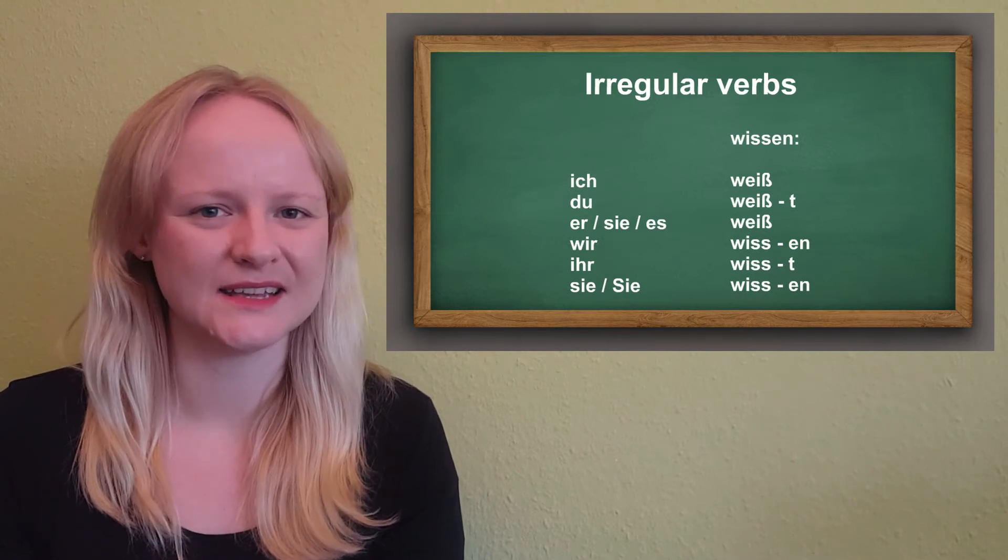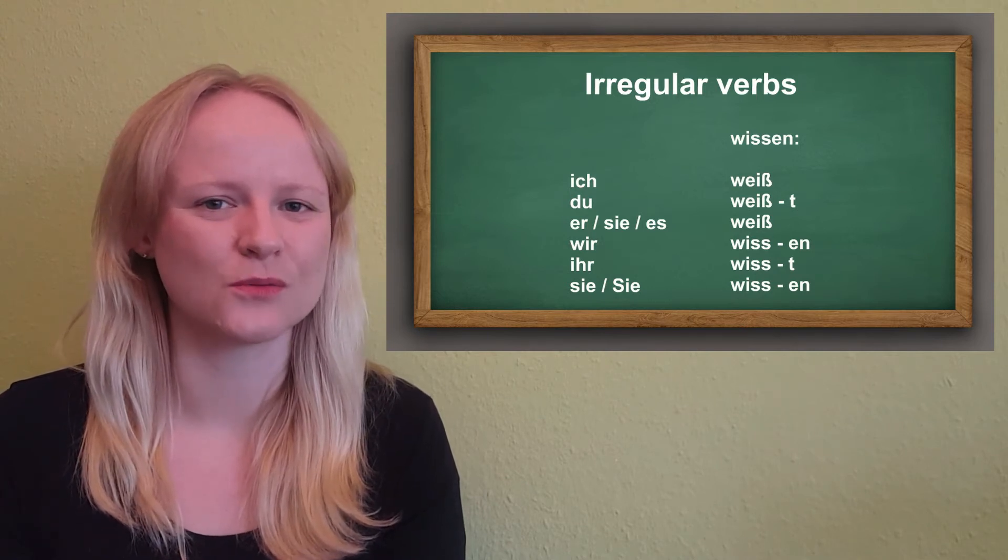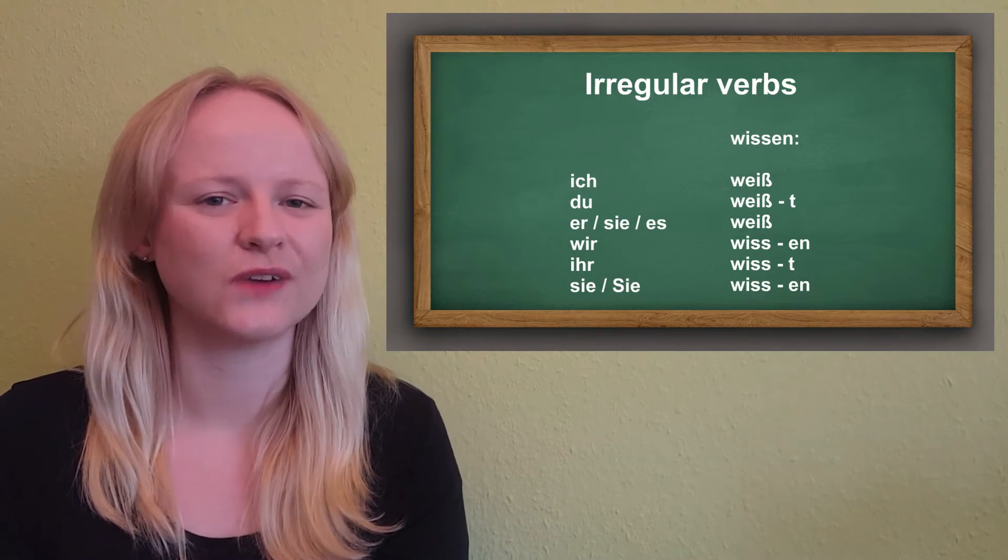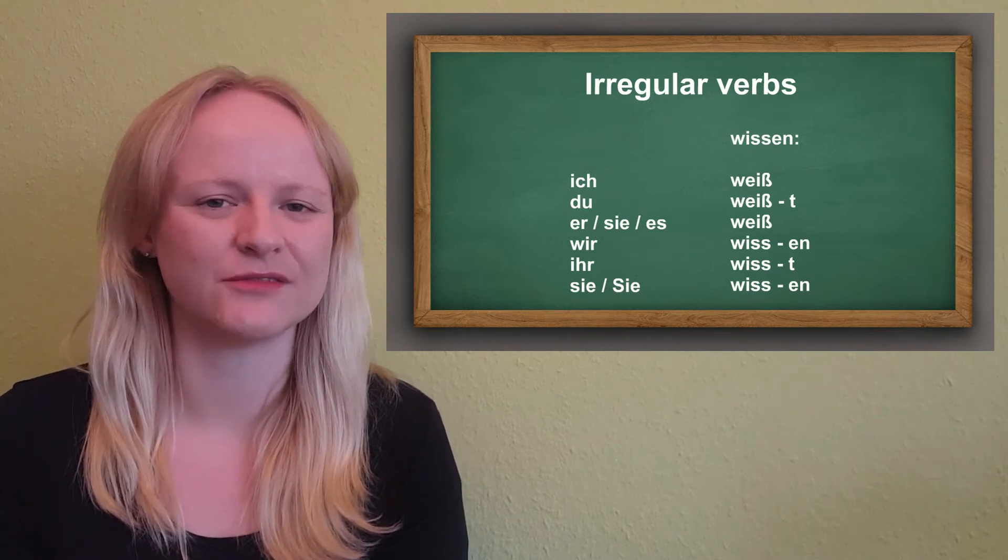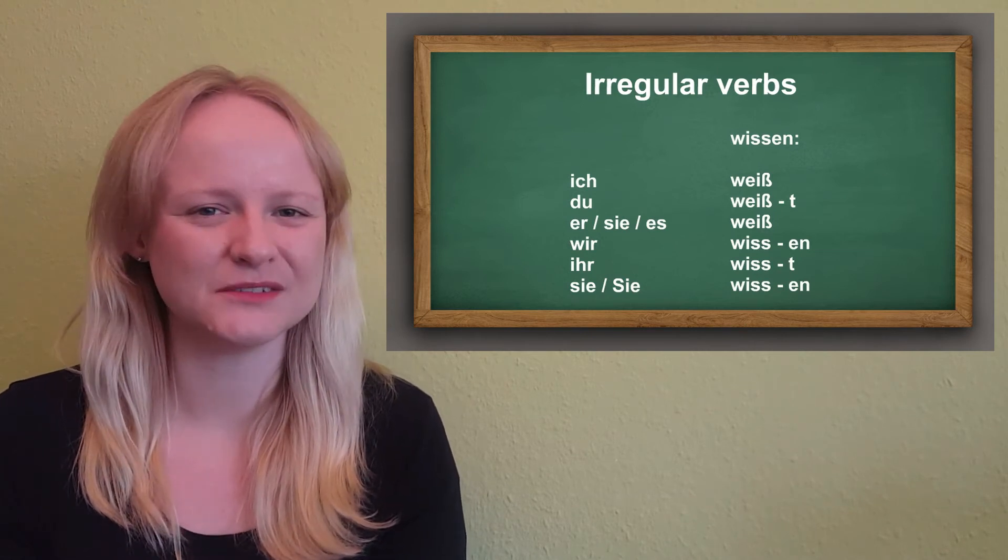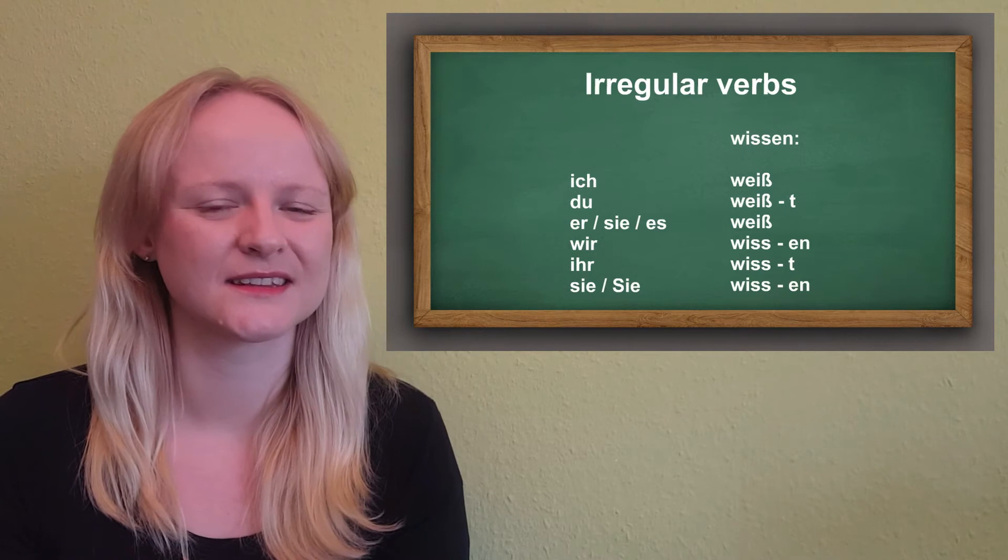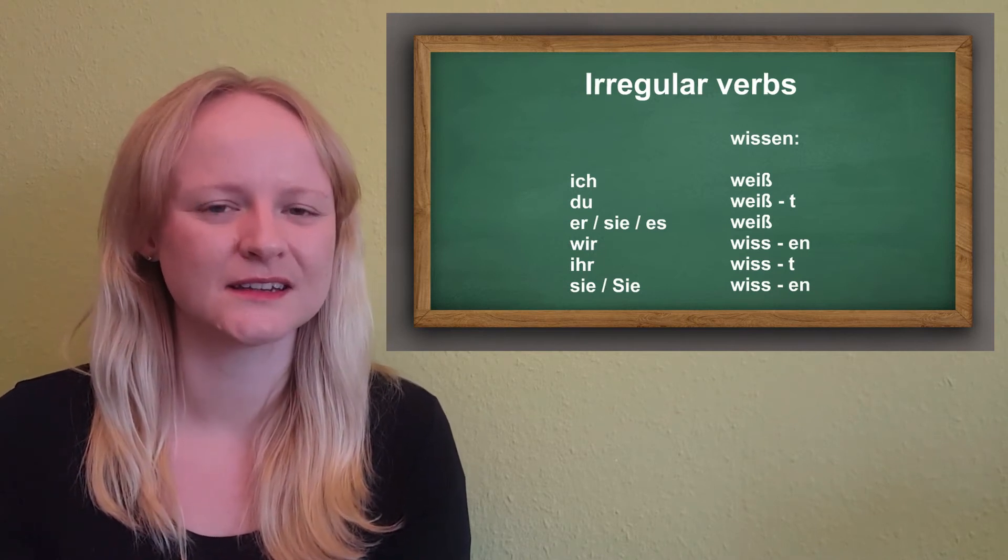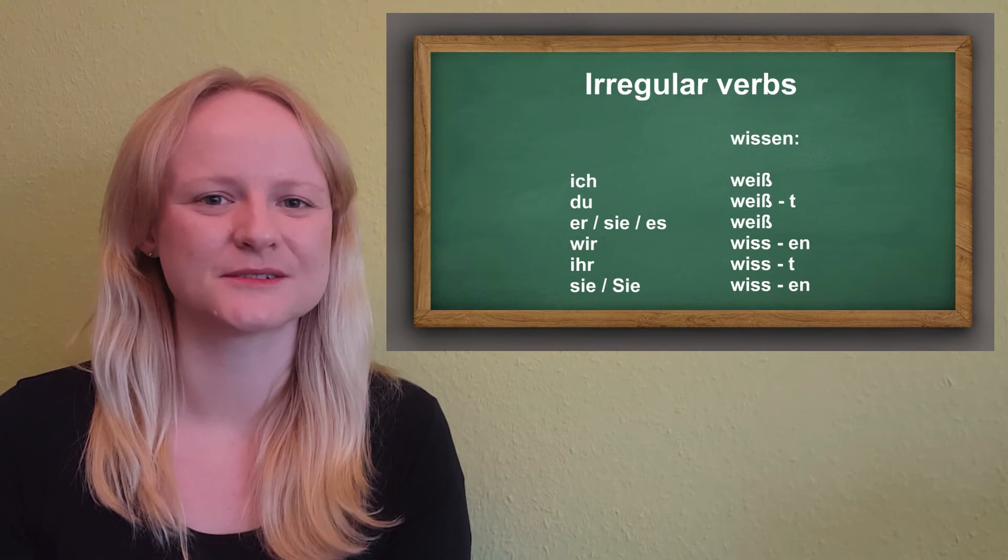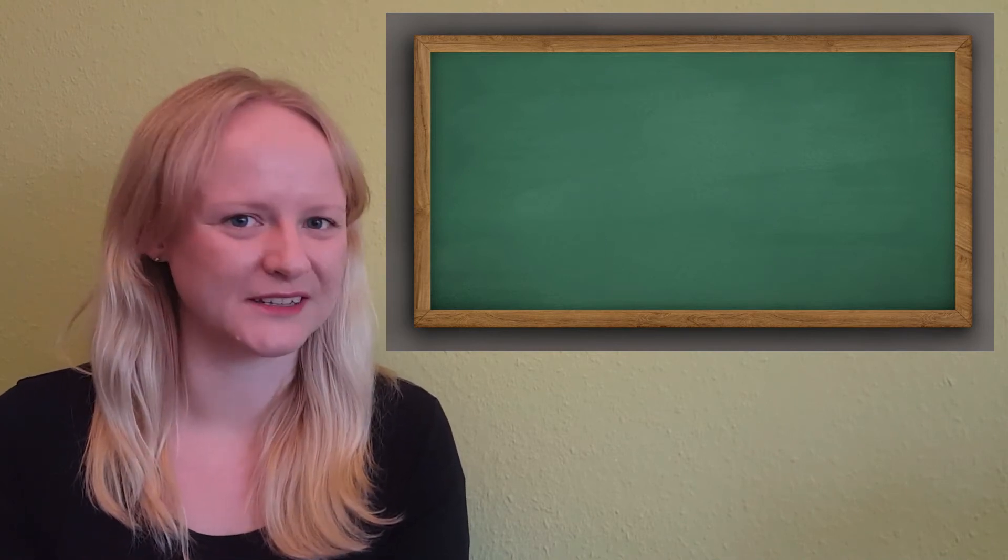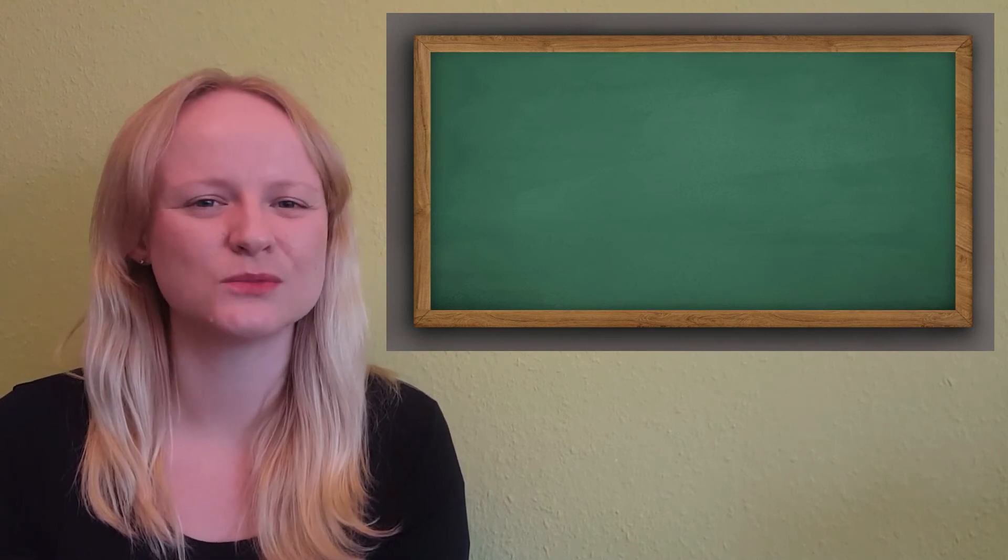And lastly, wissen, to know. Ich weiß, du weißt, er weiß. This is totally irregular here, even in the conjugation endings. Wir wissen, ihr wisst, sie wissen. So far, so irregular, so good. Now, how can we use this?